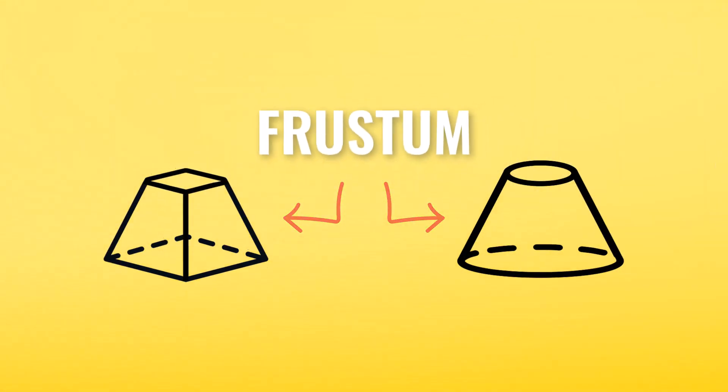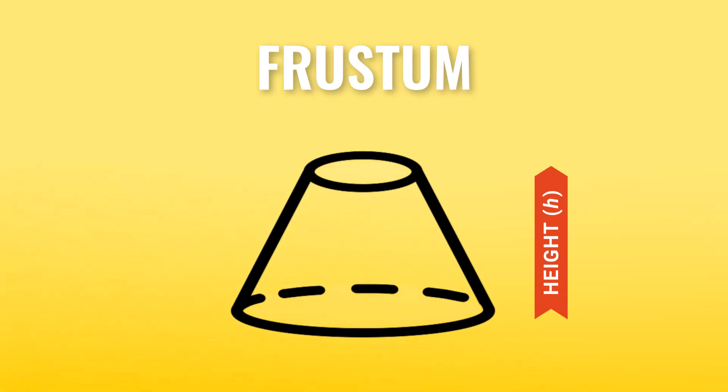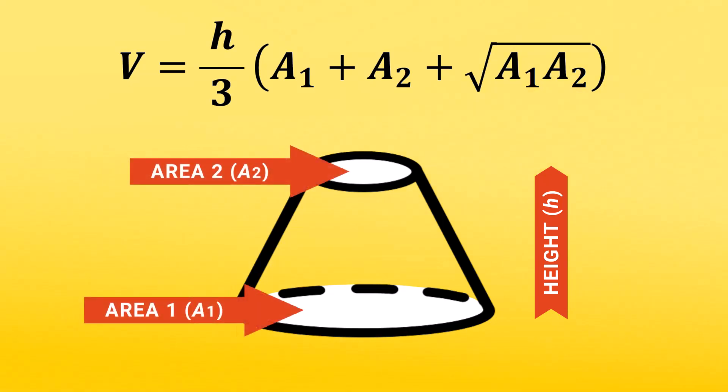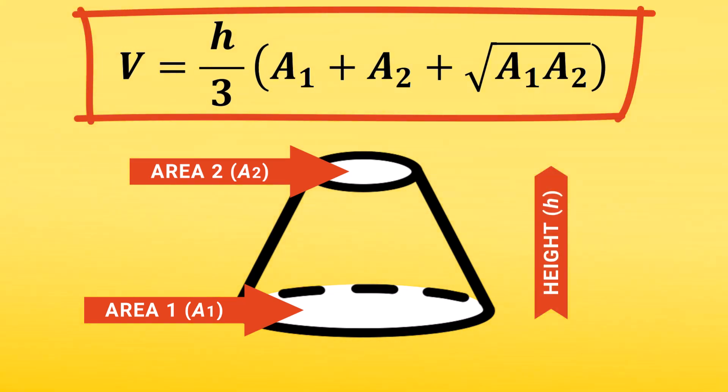The volume of any frustum can be calculated using its height and the area of its bases. The formula we've used in past lessons is currently shown. It requires knowing the two areas of the parallel sides, which are considered the bases, and the overall height. In this video, we'll learn how to derive this intricate formula.